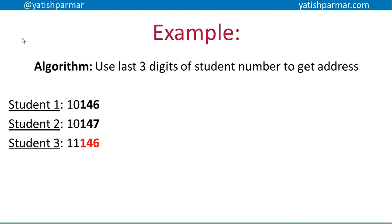You'll see why a sparse database is best when you look at an example. Say our algorithm is a basic one where we use the last three digits of a student number to generate the address. When student one comes along we use address 146, when student two comes along we use address 147, but when student three comes along we'd hit address 146 again. We can't store there because student one's data is already there.